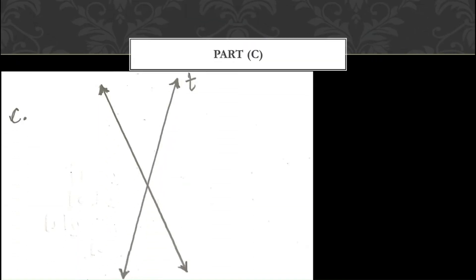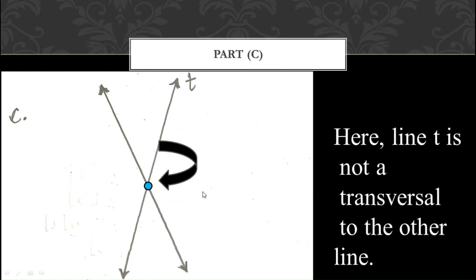Now let us move on to part C. Here line T is intersecting the other lines at only one point. Since it intersects at only one point, line T is not a transversal to the other lines in this case.